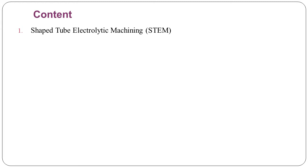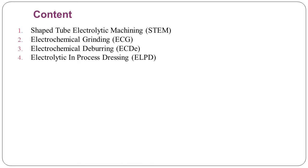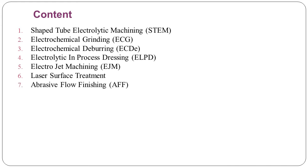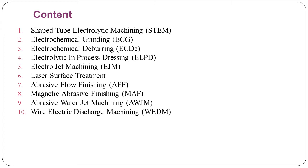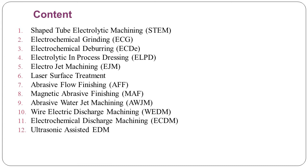In this unit on hybrid non-conventional machining techniques, we are going to see the following processes: Shape Tube Electrolytic Machining (STEM), Electrochemical Grinding (ECG), Electrochemical Deburring (ECDE), Electrolytic In-Process Dressing (ELPD), Electrojet Machining (EJM), Laser Surface Treatment, Abrasive Flow Finishing (AFF), Magnetic Abrasive Finishing (MAF), Abrasive Water Jet Machining (AWJM), Wire Electric Discharge Machining (WEDM), Electrochemical Discharge Machining (ECDM), Ultrasonic Assisted EDM, and Rotary EDM. These are several types of non-conventional machining processes where more than two non-conventional processes are involved in one particular process.